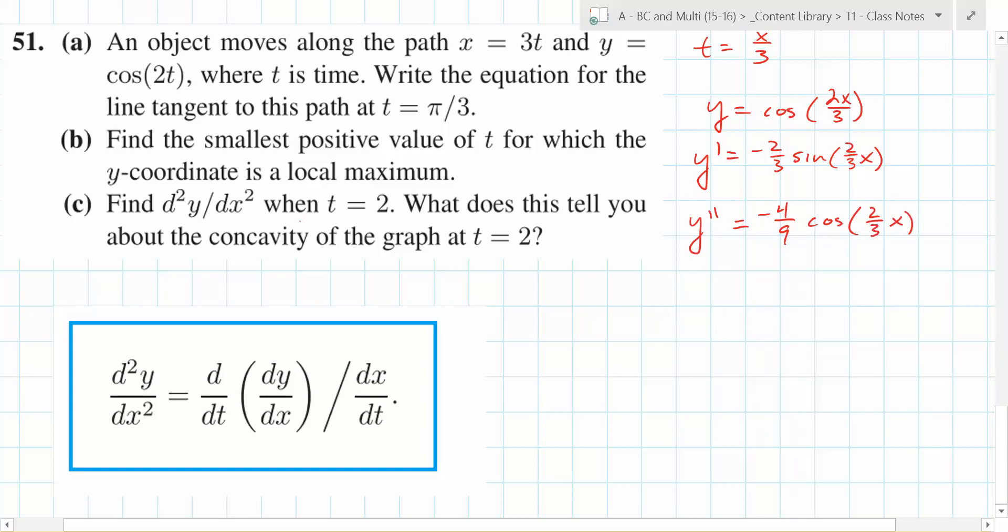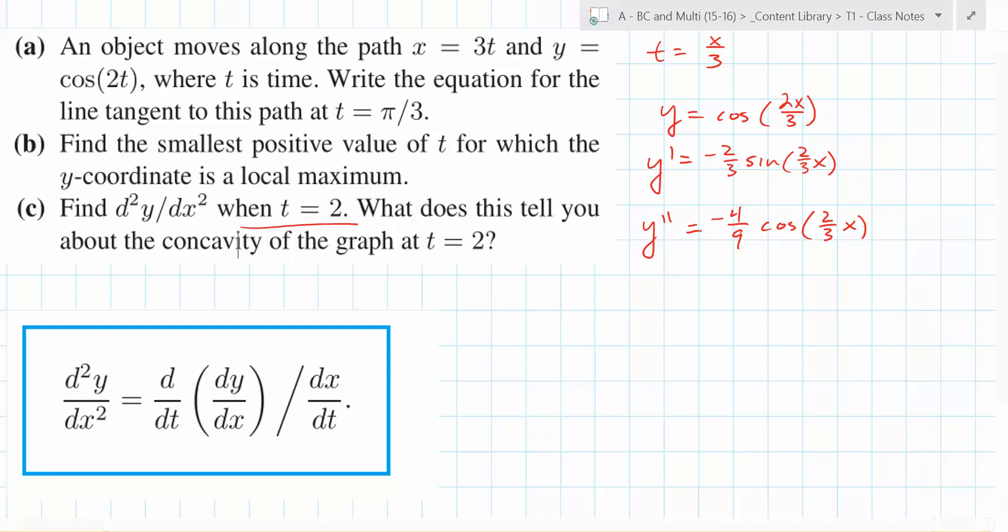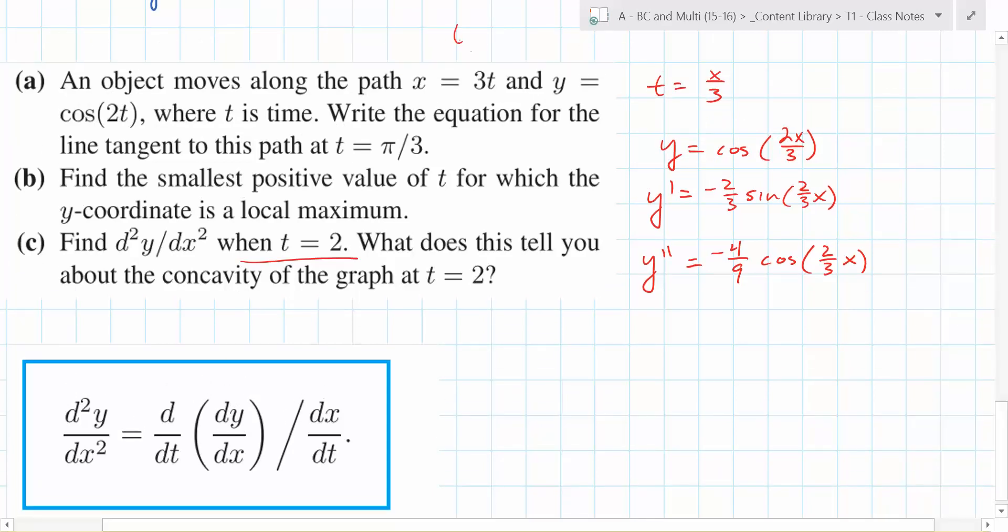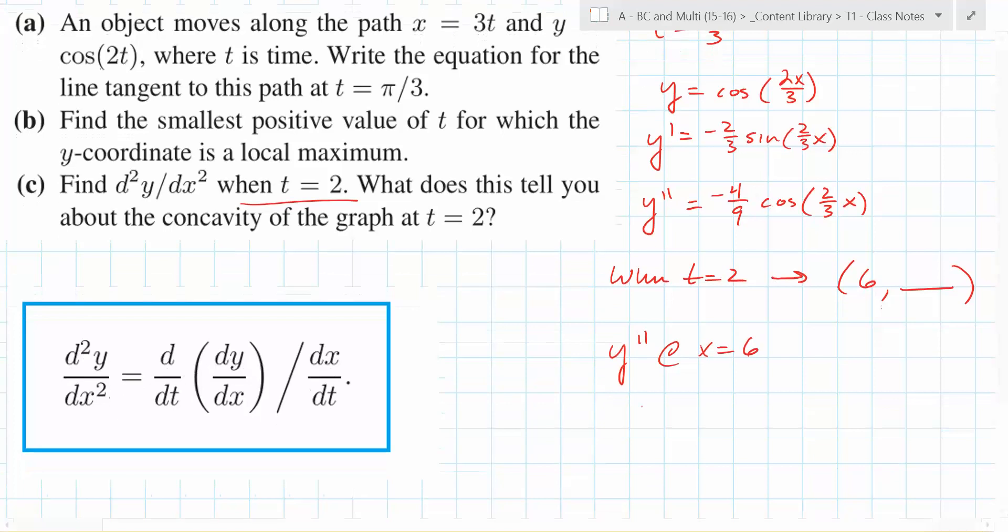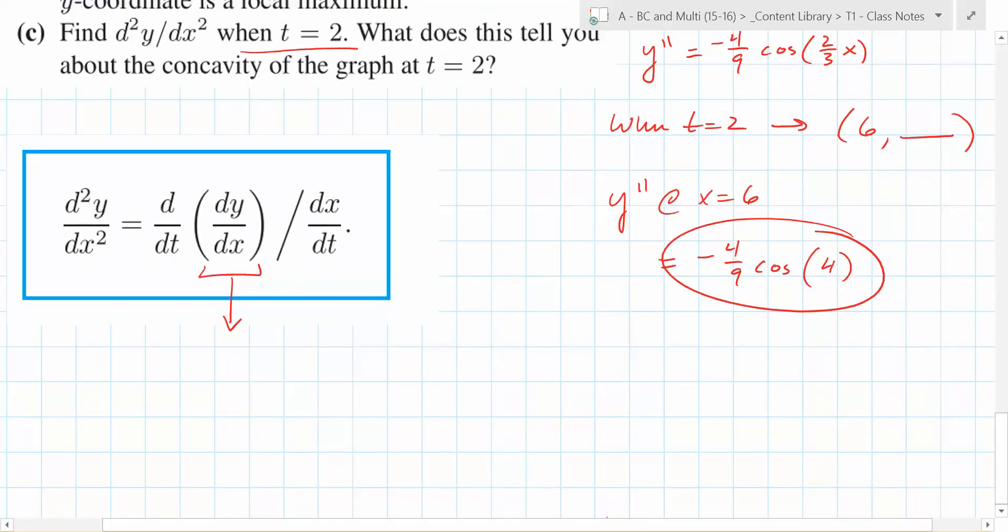2 thirds x like that. And then it's when, oh, when t equals 2. So what do you have to do before you can plug in here? Can you just plug t back in? Yeah. t equals 2 into there. So when t equals 2, what does that mean? What coordinate are you at? 6. And this doesn't really matter. You just want the x value, right? You just want the x value. So where do you plug that? You plug the x value in. So you get y double prime at x equals 6 is going to be equal to negative 4 ninths. Cosine of what? 4. 4. Yes. Correct. So there's your answer right there. So that will be correct.